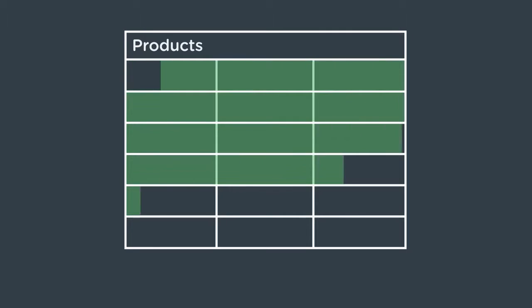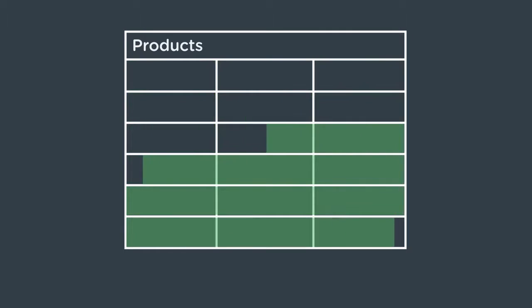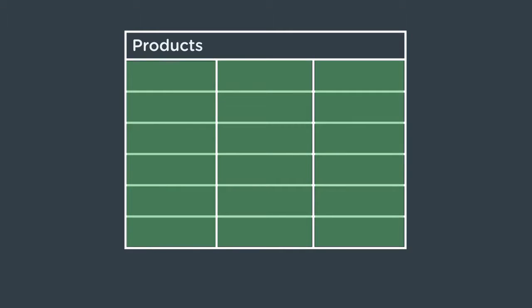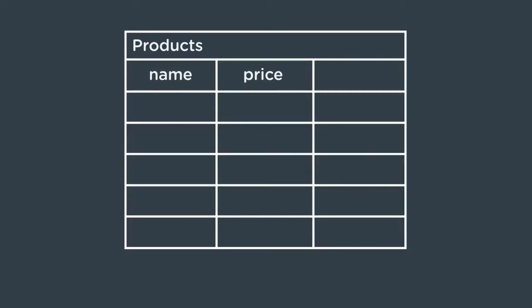A relational database like MySQL stores data into collections known as tables. A table is a spreadsheet-like structure made of columns and rows. We'll store all the products in one table. Each row in that table will represent one shirt. Each column in that table will represent one piece of information about the shirts — the name of the shirt, the price, the path to the image, and so on.